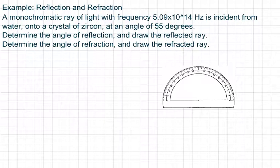Here's the example question: a monochromatic ray of light with frequency 5.09 times 10 to the 14 hertz is incident from water onto a crystal of zircon at an angle of 55 degrees. Determine the angle of reflection and draw the reflected ray. Determine the angle of refraction and draw the refracted ray.